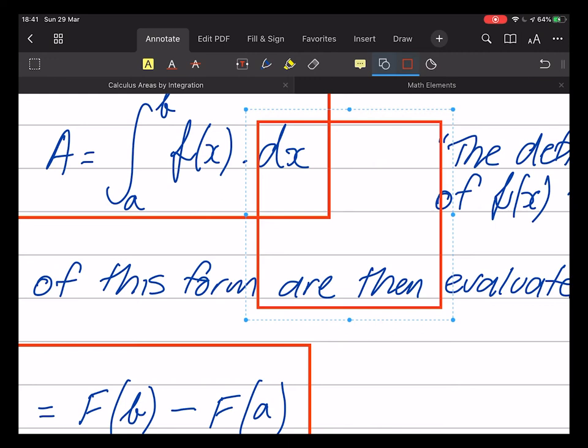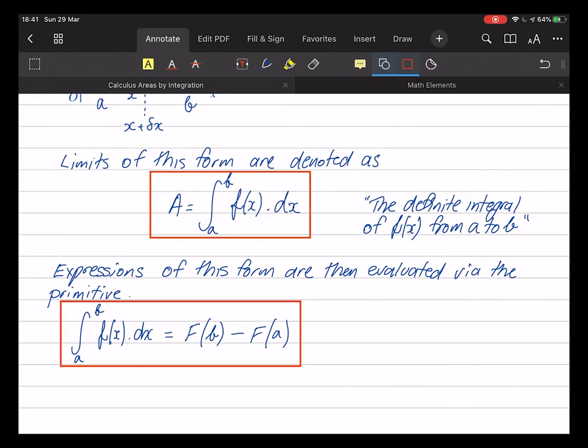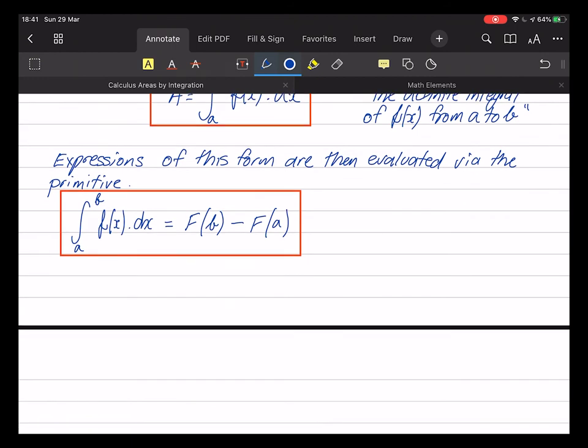So, if I do have the integral from a to b of f of x dx, then that's the primitive value at b minus the primitive value at a.